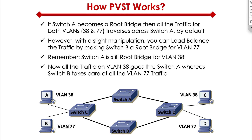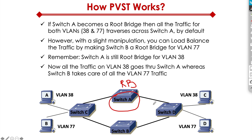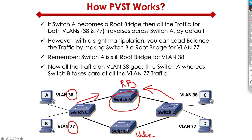How does PVST work? Here's an example. If this switch right here ends up becoming a root bridge for all traffic, what's going to happen is, whether the traffic belongs to VLAN 38 or VLAN 77, everything is going to be funneled through switch A. That means switch B for the most part is going to be sitting idle, and that's not good because we spent money on networking and we want to utilize our resources efficiently.